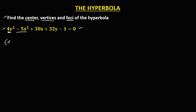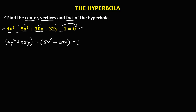So we have 4y squared plus 32y. Since this one is negative, so minus. For the second group, we need to change all the signs. So negative 5x squared becomes positive 5x squared, and for this positive 30x — again, for the second group, we need to change all the signs. And for this constant, transpose it so that becomes positive 1.